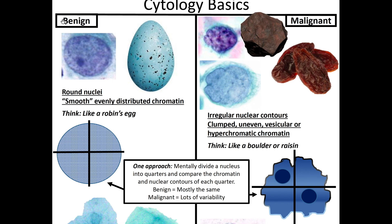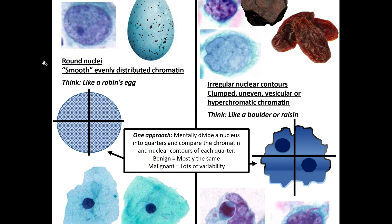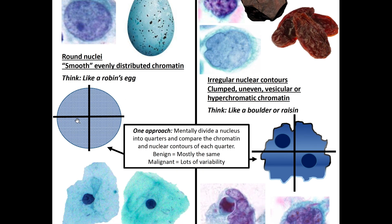On the left we have features common to benign cells and on the right features common in malignant cells. Benign features include round nuclei with smooth, evenly distributed chromatin — you can see it's evenly distributed here, not clumpy like in the malignant cell. One approach is dividing the nucleus into quarters and comparing the chromatin and nuclear contours of each quarter.